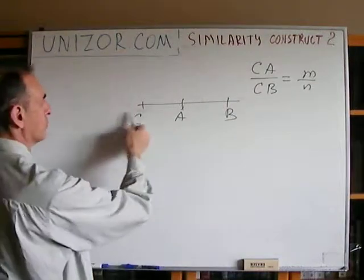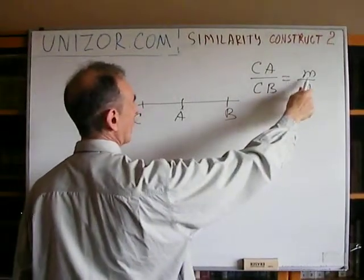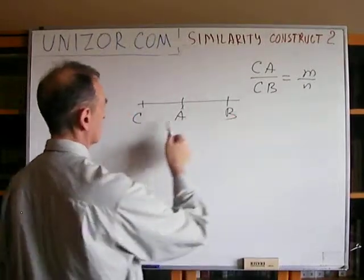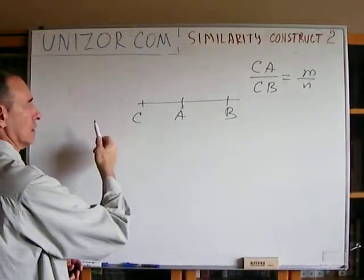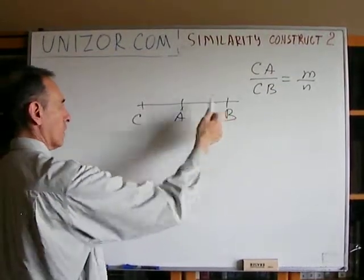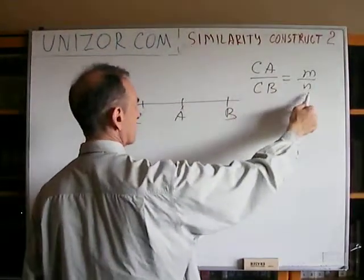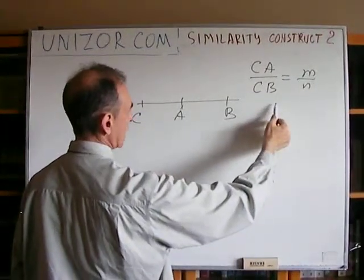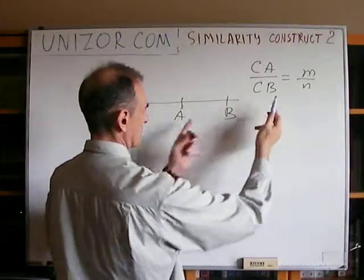If I'm looking for number M which is smaller than N, then my C should be on the left side of AB, because CA would be smaller than CB. If M is greater than N, it should be on the right side of AB, because then CA would be greater than CB.